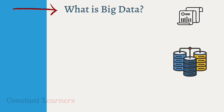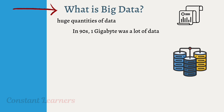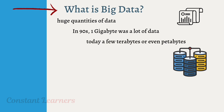Let's start with the term big data. Big data is huge quantities of data. In the 90s, even a gigabyte was a lot of data, but today a few terabytes or even petabytes is being generated — and this is known as big data. This much data is being generated through multiple different sources. Questions like why we need so much data, how it is generated, stored, managed, and what its use is are important ones we need to look for answers to.